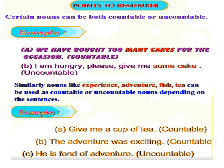Similarly, nouns like experience, adventure, fish, and tea can be used as countable or uncountable depending on the sentence. For example: 'Give me a cup of tea' — that is countable; you can count a cup of tea, two cups of tea, three cups of tea. Example B: 'The adventure was exciting' — that is countable. Example C: 'He is fond of adventure' — here, adventure is uncountable.